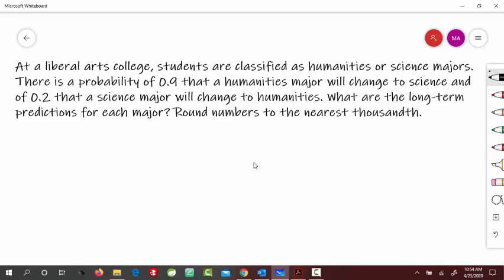So first of all, we will try to write a transition matrix A. So let's say for humanities, it's represented by H, and for science, it's represented by S. So matrix A, transition matrix A would be humanities, science.